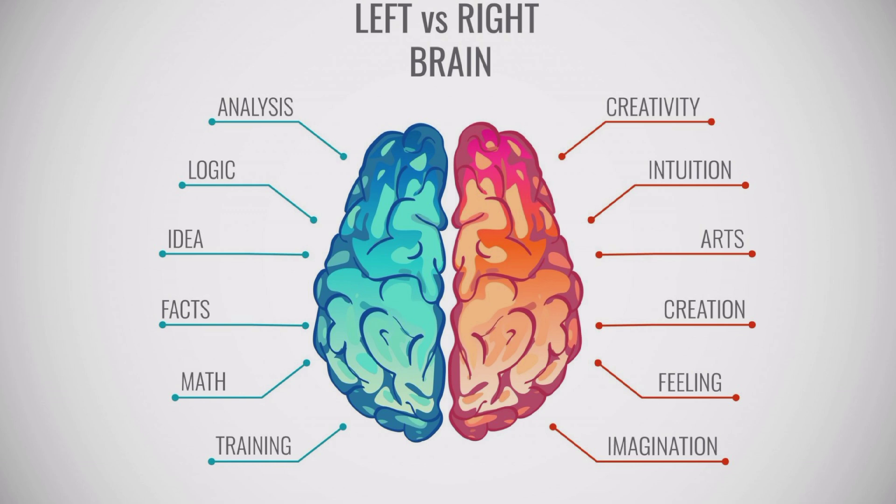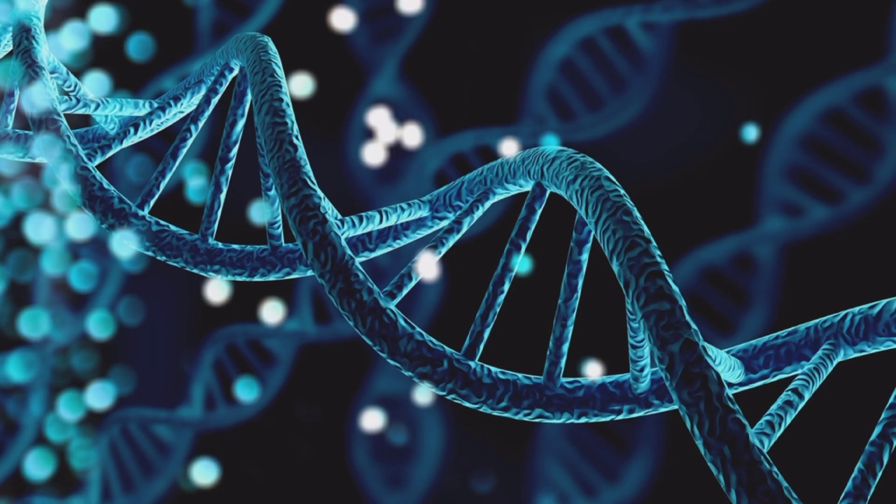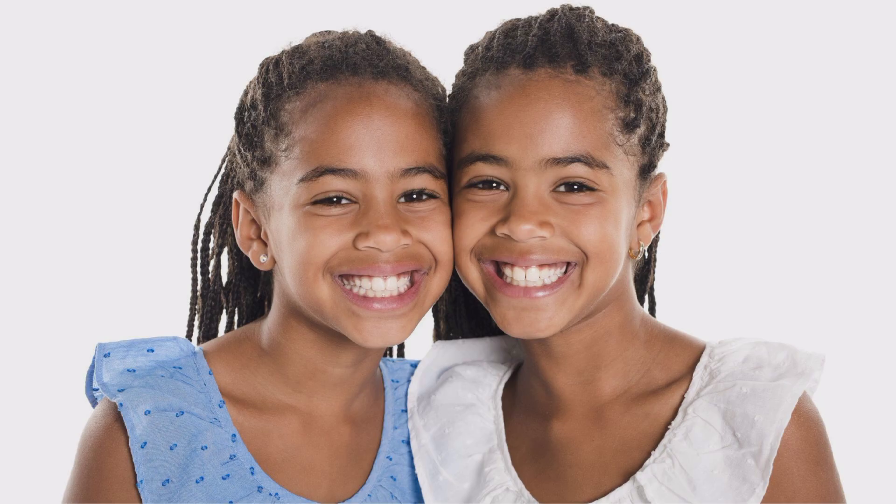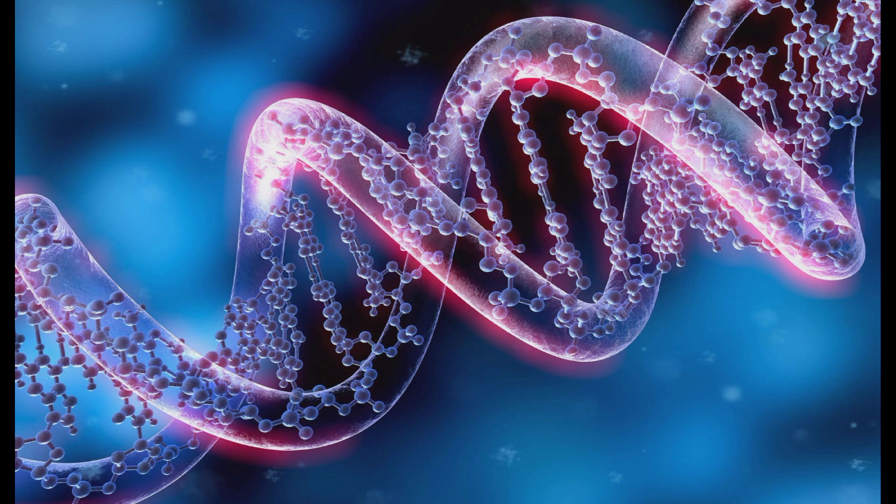The reason behind this brain asymmetry lies in genetics. Studies examining twins have shown that genes significantly influence hand preference. However, it's not as simple as just one gene. Multiple genetic variations likely contribute to this complex trait, making it challenging to pinpoint a single cause.